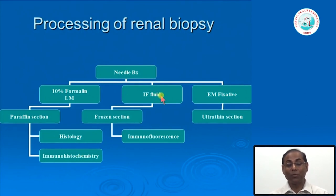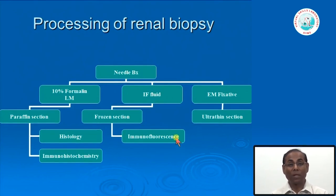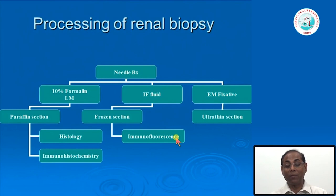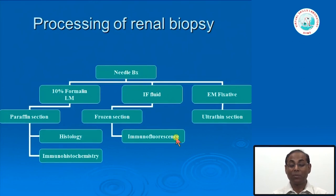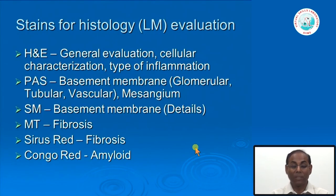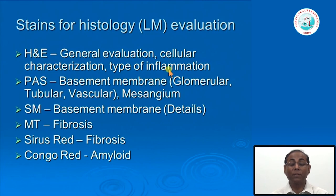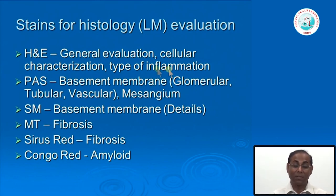For the immunofluorescence tissue, we perform immunofluorescence microscopy to see what types of immune complexes or immunoglobulins are deposited, the complement components, and whether immunoglobulins are monoclonal or polyclonal. For light microscopy we do the routine hematoxylin and eosin stain for general evaluation, cellular characterization, and identifying types of inflammatory cells such as neutrophils or lymphocytes.